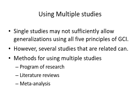Several studies can give us a much better argument for overall generalization. The method for using multiple studies includes programs of research, literature reviews, and meta-analysis — meta-analysis is only one technique to do this. Many researchers do the same kind of research over and over again; they have a program of research, doing one study after another in very similar areas and concepts with slight tweaks. That's what a program of research is.